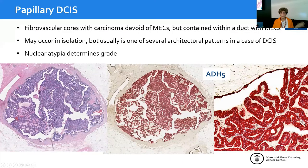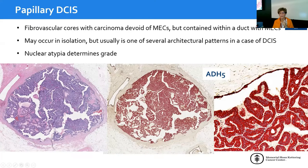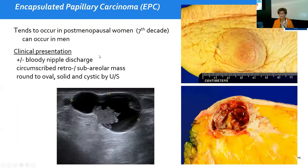Papillary DCIS is composed of fibrovascular cores with carcinoma that has no myoepithelial cells along the papillae, but is contained within a duct that retains myoepithelial cells—as demonstrated on triple stain. It may occur in isolation but usually represents one of several architectural patterns in a case of DCIS. Nuclear atypia determines the grade.